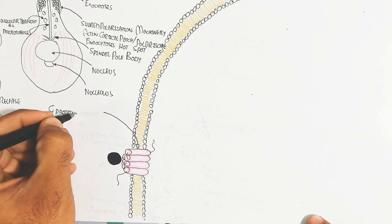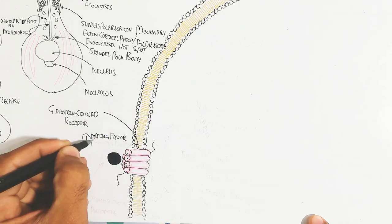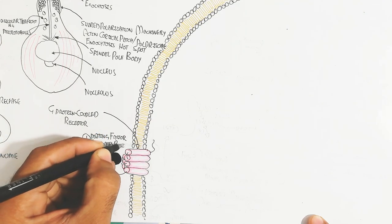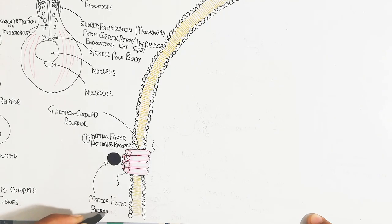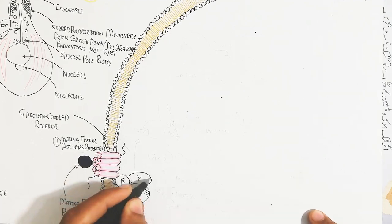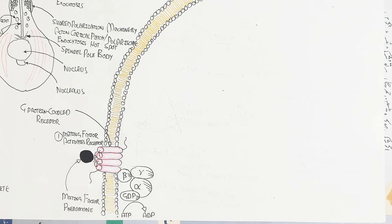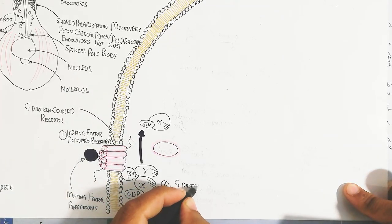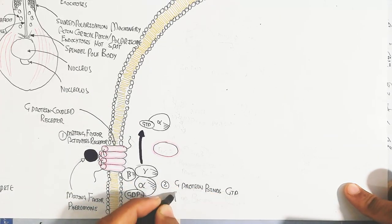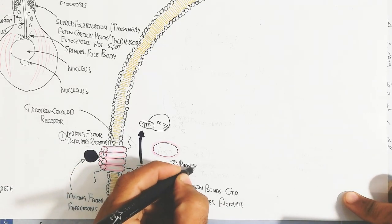Here you can see the G-protein coupled receptor cellular pathway. The mating factor activates the receptor — the mating factor pheromones bind to recruit the yeast toward the mating partner. ATP is used to convert ADP in the G-protein coupled receptor trimeric complex, activating alpha-GDP into alpha-GTP. This leads to a cascade of phosphorylation to activate the Fus3 protein into phosphorylated Fus3.